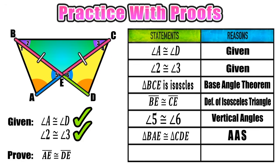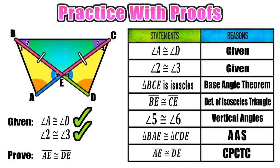Since the two line segments AE and DE that we wanted to prove congruent are parts of those triangles, showing the triangles are congruent allows us to finish the proof. We conclude that AE is congruent to DE because corresponding parts of congruent triangles are congruent (CPCTC). Since the two yellow triangles are congruent, their corresponding parts are also congruent. That's all there is to it.